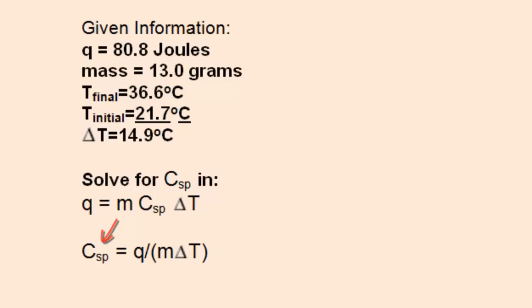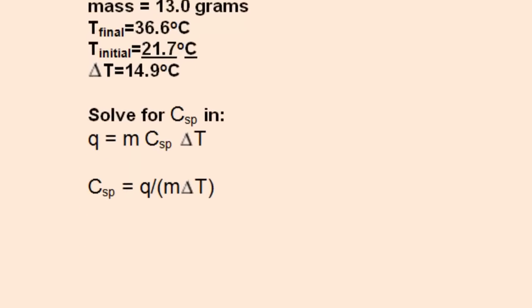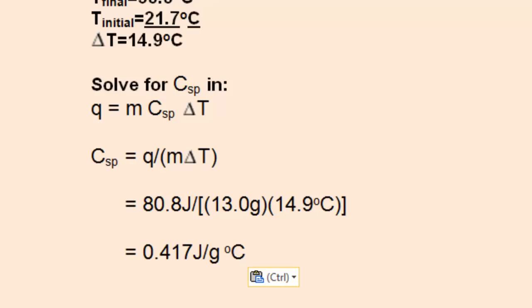Then just substitute the values in from the given information. Keeping the appropriate units of joules, grams, and degrees Celsius. You'll come up with .417 joules per gram degree C.